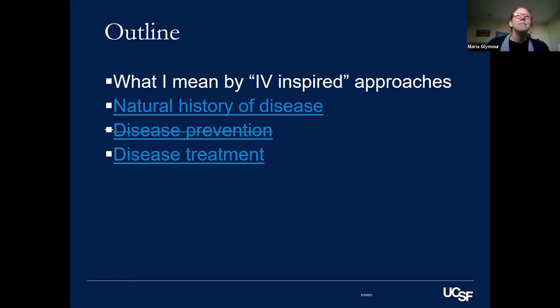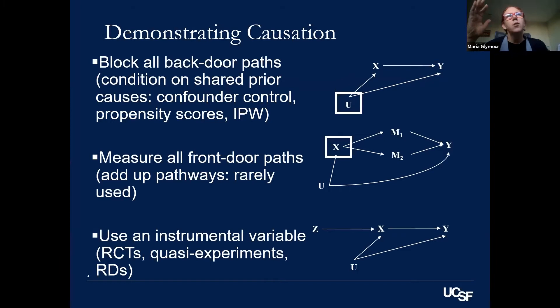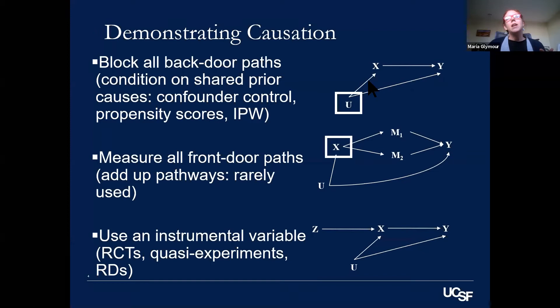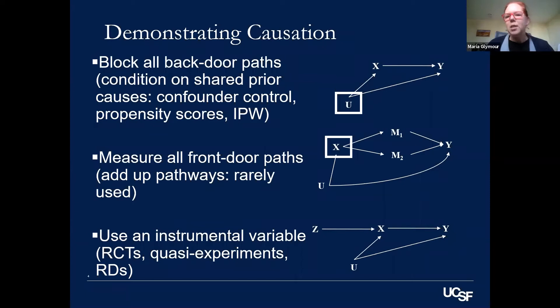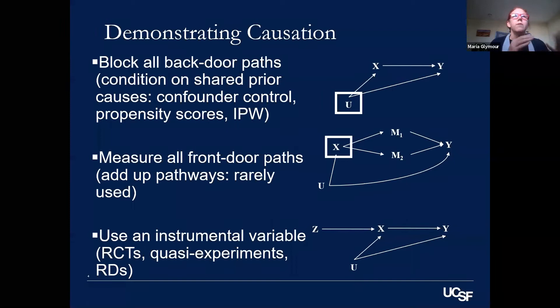So let me start by talking about IV-inspired approaches. If your goal is to evaluate whether some exposure influences an outcome — X causes Y — the PEARL framework says we can have three approaches. One approach familiar to any observational epidemiologist is the idea that you measure a variable that's on every backdoor path — a path connecting your exposure and outcome that begins with an arrow into your exposure. The conventional approach to observational epidemiology, including marginal structural model approaches, propensity score approaches, and inverse probability weighting, are based on measuring and blocking all backdoor paths.